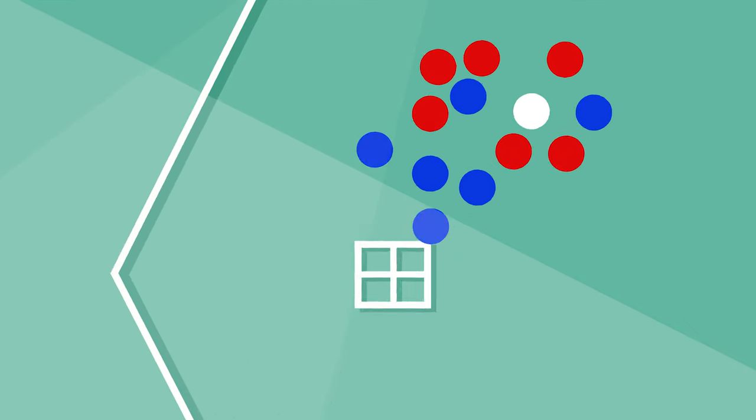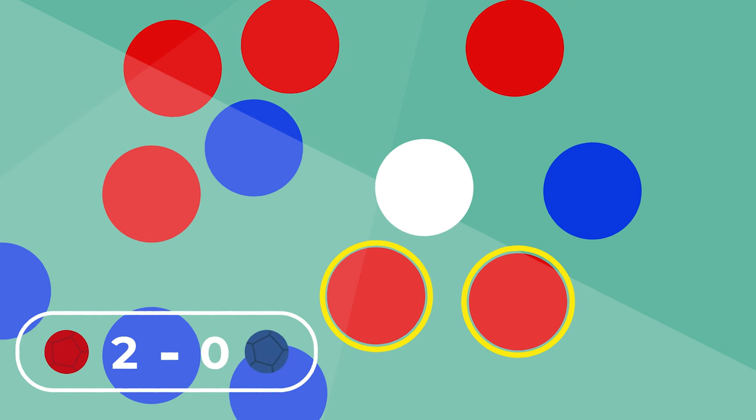Once all the balls have been played, one side receives a point for every ball they have nearer to the jack than their opponent's closest ball.